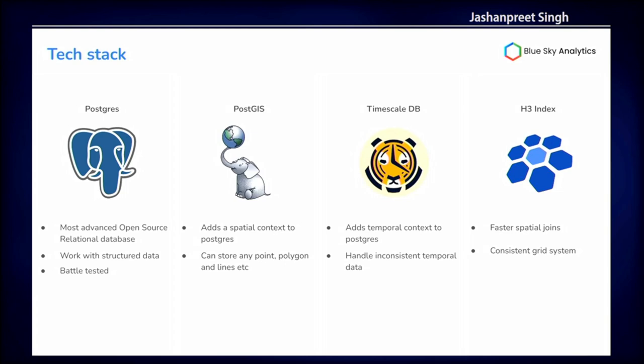The last thing is the H3 GeoLibrary by Uber. That's what we use for faster spatial joins, because it has a consistent grid system. I'll be talking more about that in the upcoming slides.